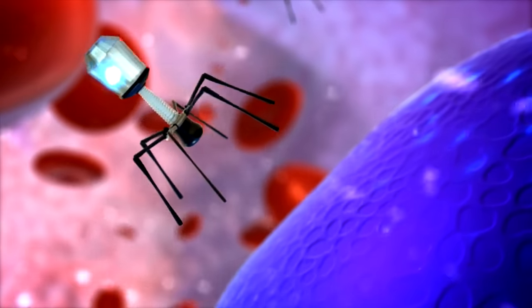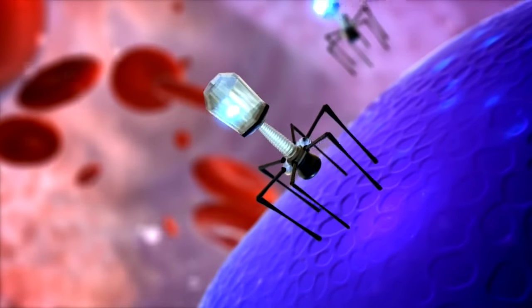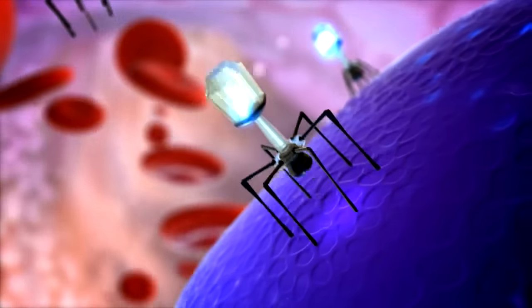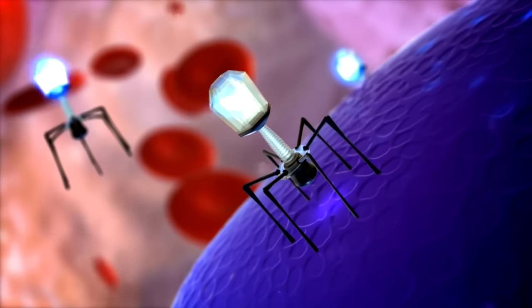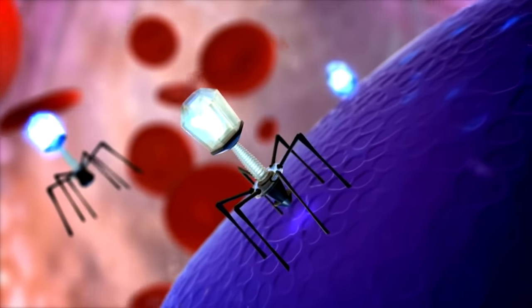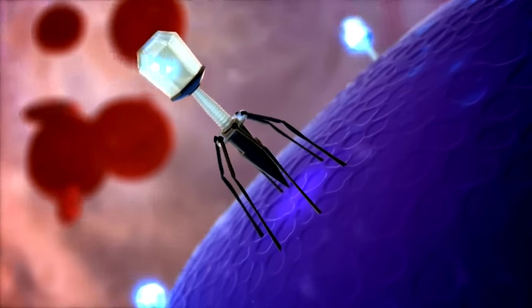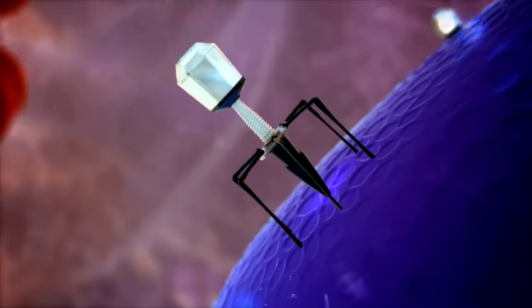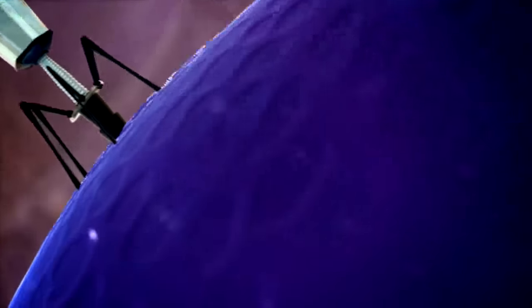The first stage of the cycle is attachment. To bind to a host cell, there must be specific receptors on the bacterial membrane to attach to. This determines a phage's host range. Once attached, the phage enzyme drills a hole in the bacterial wall and ejects its genome into the bacterial cytoplasm.